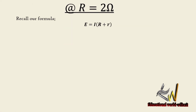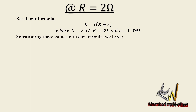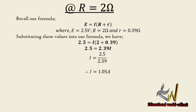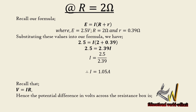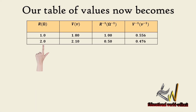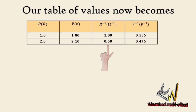When the resistance box is set to 2 ohms, substituting into our formula gives 2.5 = I(2 + 0.39), and simplifying gives current = 1.05 amperes. The voltage drop across the resistance box is V = IR = 1.05 × 2 = 2.1 volts. Table entry: R = 2 ohms, V = 2.1 volts, 1/R = 0.5 per ohm, 1/V = 0.476 per volt.